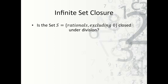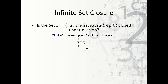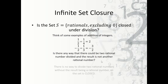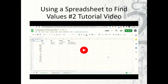What if we consider the set of rationals excluding zero — is it closed under division? We think of examples: one-half divided by one-fourth equals 2; negative one-half divided by one-third uses the reciprocal rule. No matter what rational numbers we divide (excluding zero), the result is always another rational number. Since we've excluded zero, we don't need to worry about division by zero, and we can conclude the set is closed under division.